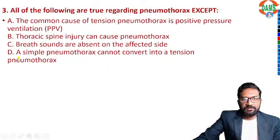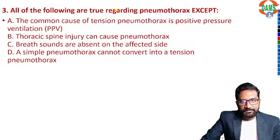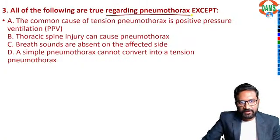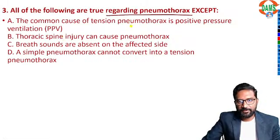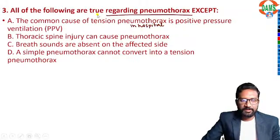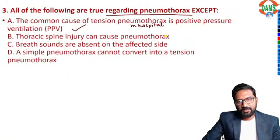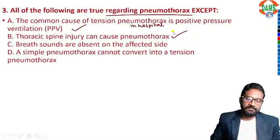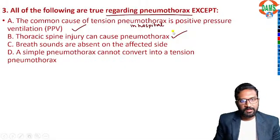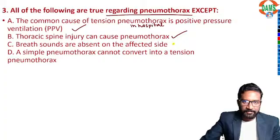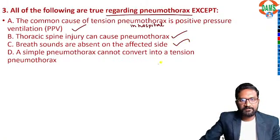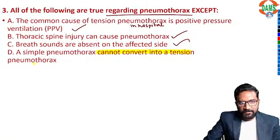The third question: all of the following regarding pneumothorax except — the common cause of tension pneumothorax in hospital is positive pressure ventilation? Yes. Thoracic spine injury can cause pneumothorax as part of chest injury? Yes. Breath sounds are absent on the affected side? Yes. Then: a simple pneumothorax cannot convert to tension pneumothorax — this is a false statement.